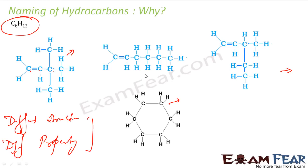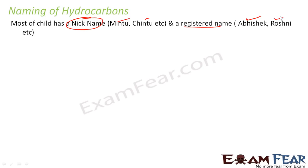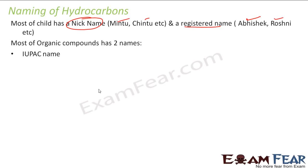And that is why we have IUPAC. For any hydrocarbon, we have two kinds of names. For us also, you see, there are two names — for example, we have nicknames like Mintu, Chindu, Bittu; and we have a registered name in school or on our certificates, like Abhishek or Roshni. Those are good, registered names. Similarly, for all organic compounds, we have two names: IUPAC name and common name.